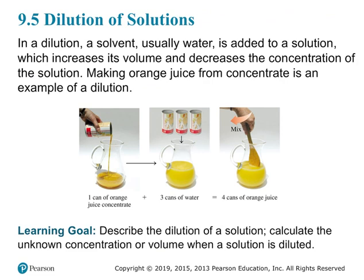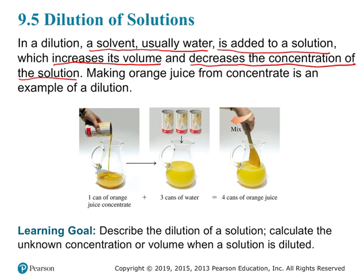In a dilution, a solvent — usually water — is added to a solution, which increases its volume and decreases the concentration. For instance, if you've ever bought those concentrated juice mixes at the grocery store — my personal favorite is POG juice — you can pour the concentrate into a larger jar and then dilute it with water.